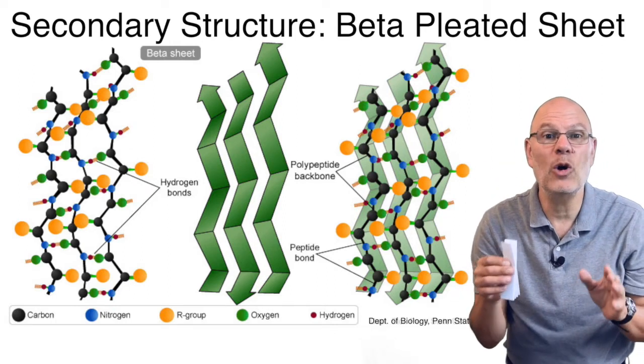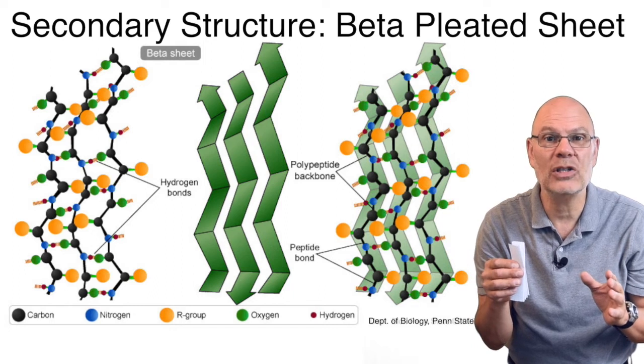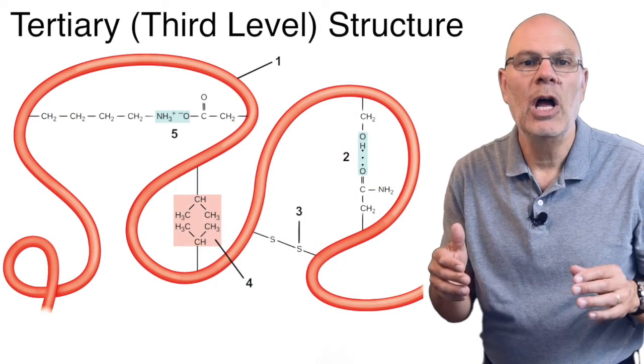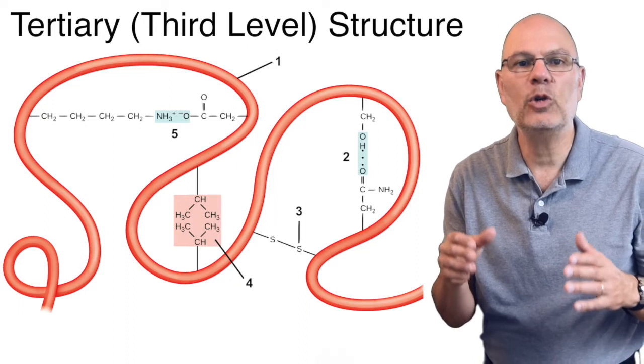Because of tertiary or third-level interactions. Tertiary structure, third-level structure, comes about through interactions between R groups.